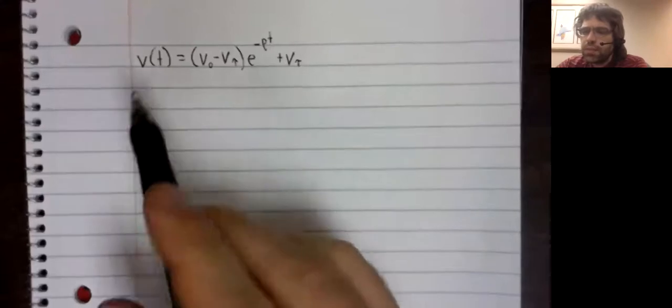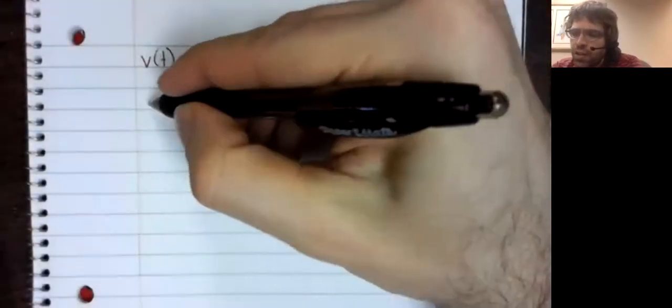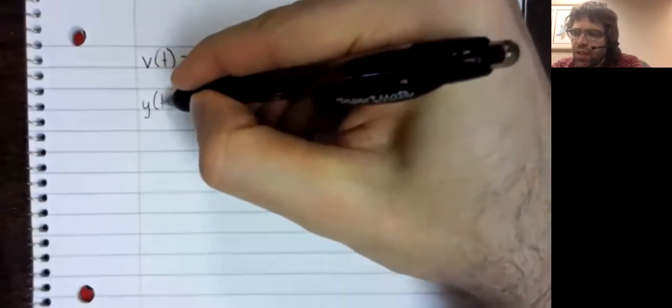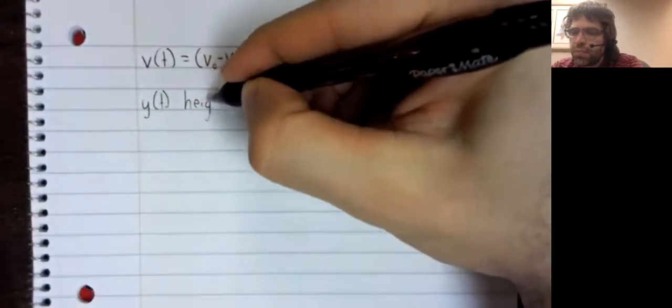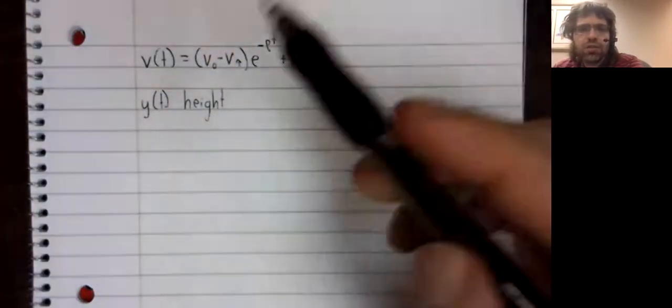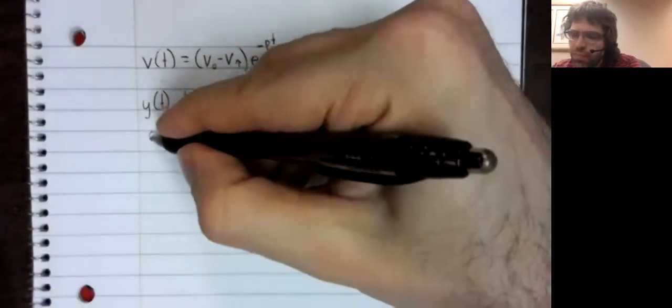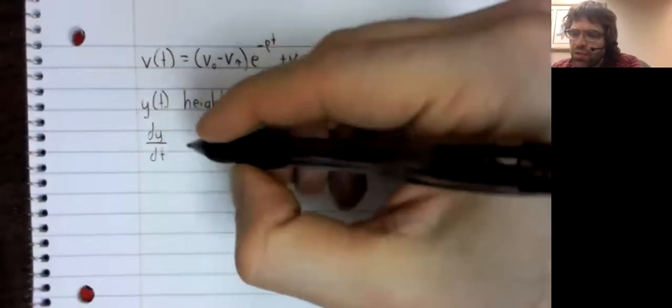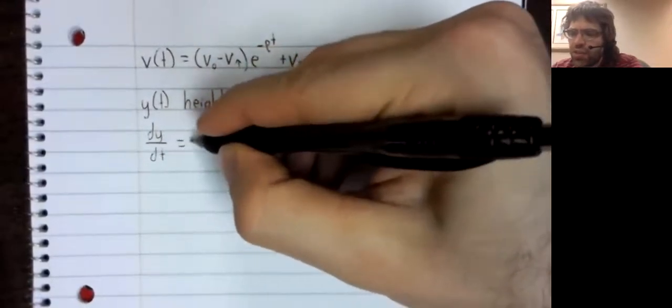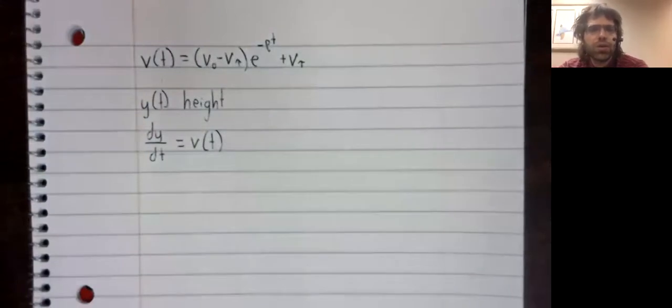Here is our velocity function. Let's give the height function a name. Let's call it y of t. The relationship between this object's height and its velocity is well known from calculus.